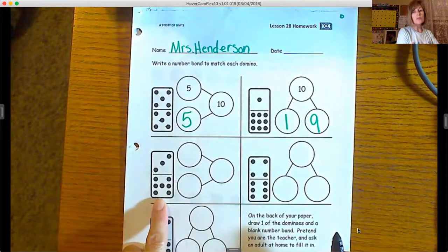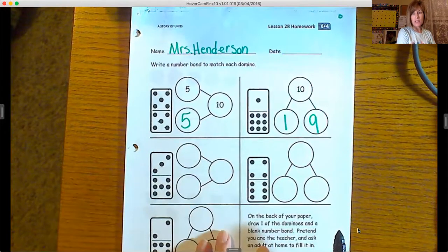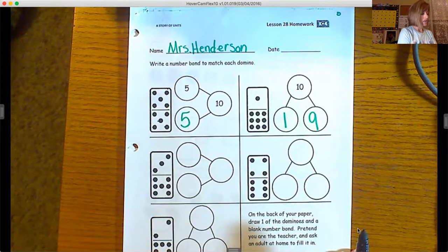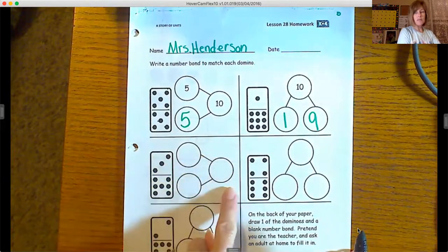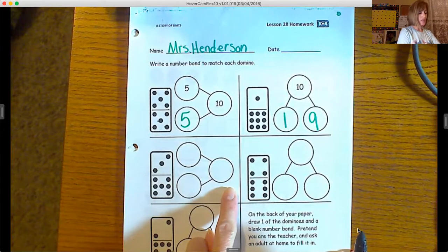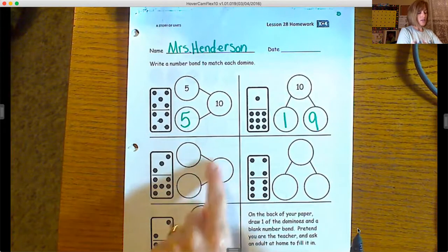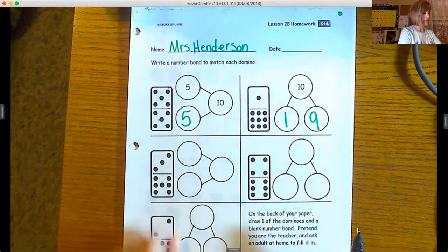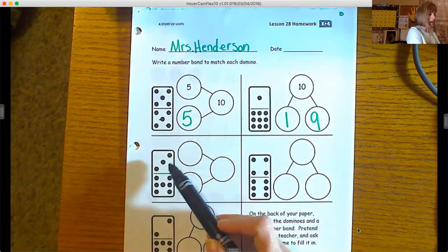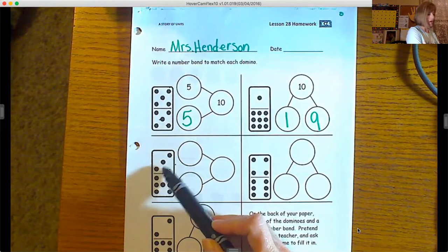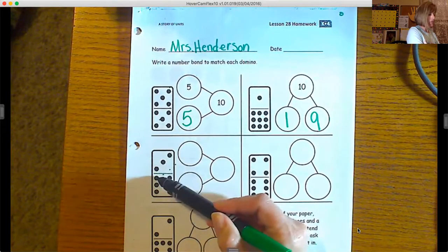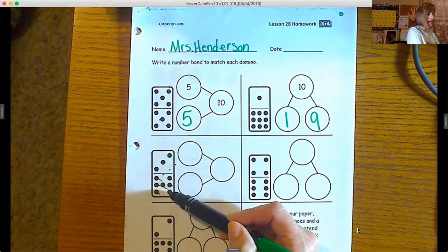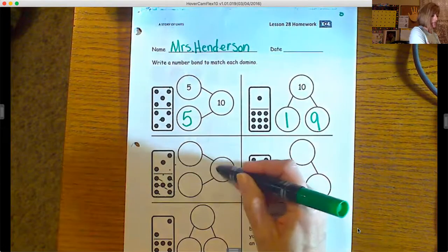All right, let's look at this one here. I'm going to do this one with you and then I'm going to let you do the rest by yourself, kind of like we would do in class. So it has none of the numbers filled in for us, so we have to figure out first of all—let's figure out what the whole number is. So we'll count together. Count with me. We have one, two, three, four, five, six, seven, eight, nine, ten, so we're going to put ten here.